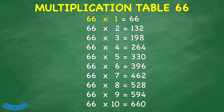66 times 1 equals 66. 66 times 2 equals 132. 66 times 3 equals 198. 66 times 4 equals 264. 66 times 5 equals 330.